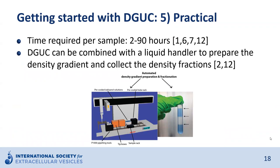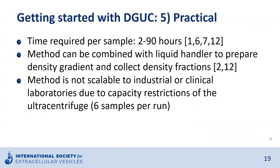The time required to perform density gradient ultracentrifugation varies between 2 and 90 hours. The duration depends on the setup: rate zonal density gradient ultracentrifugation is typically shorter compared to isopycnic density gradient ultracentrifugation, which requires particles to reach their equilibrium density. Gradient preparation and fraction collection can be performed with automated liquid handlers to increase reproducibility and reduce hands-on time. However, the method is not scalable to industrial or clinical laboratories, as throughput is overall rather low and restricted by the use of an ultracentrifuge.